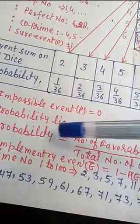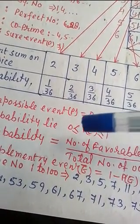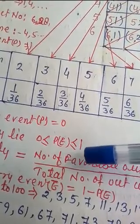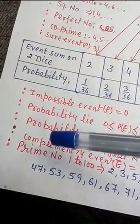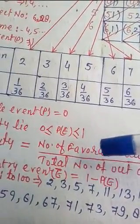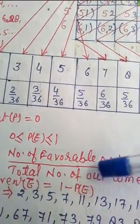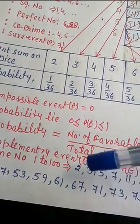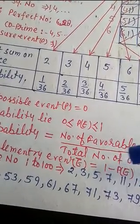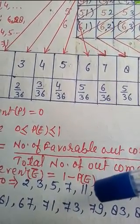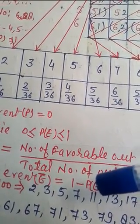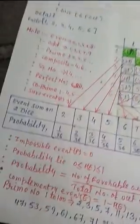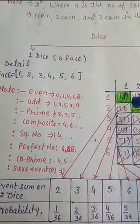The probability lies between 0 to 1. It means probability may be 0, or greater than 0, or less than 1, or equals to 1. Probability equals number of favorable outcomes upon total number of outcomes. The complementary event E bar equals 1 minus probability of E. The sum of all events probability equals 1.